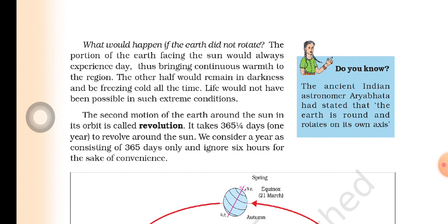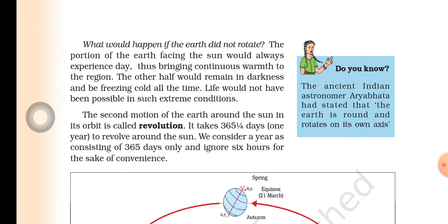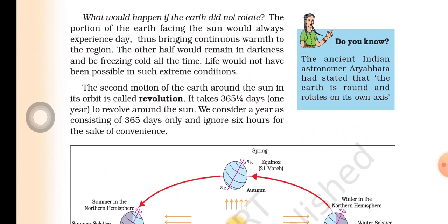Now let's see what would happen if the earth did not rotate. The portion of the earth facing the sun would always experience day, thus bringing continuous warmth to the region. The other half would remain in darkness and be freezing cold all the time. Life would not have been possible in such extreme conditions.